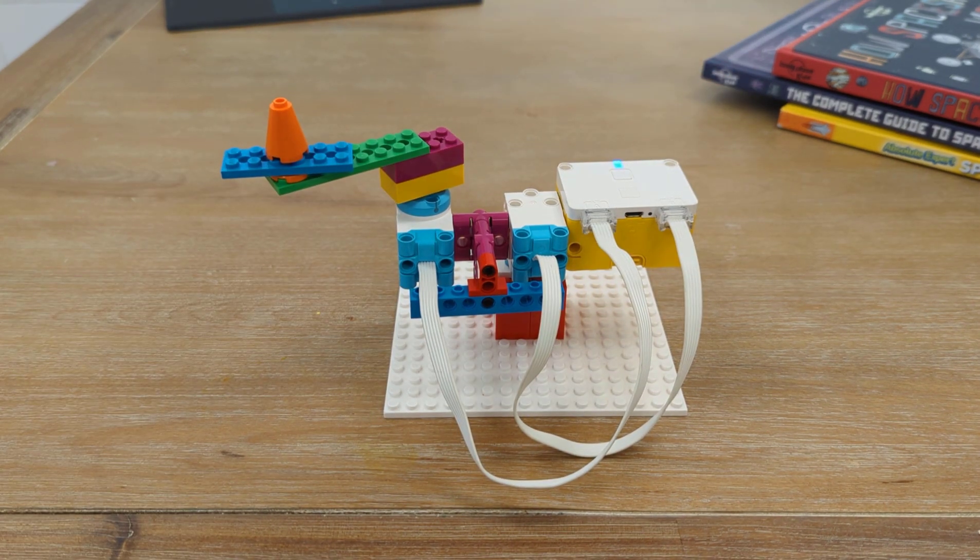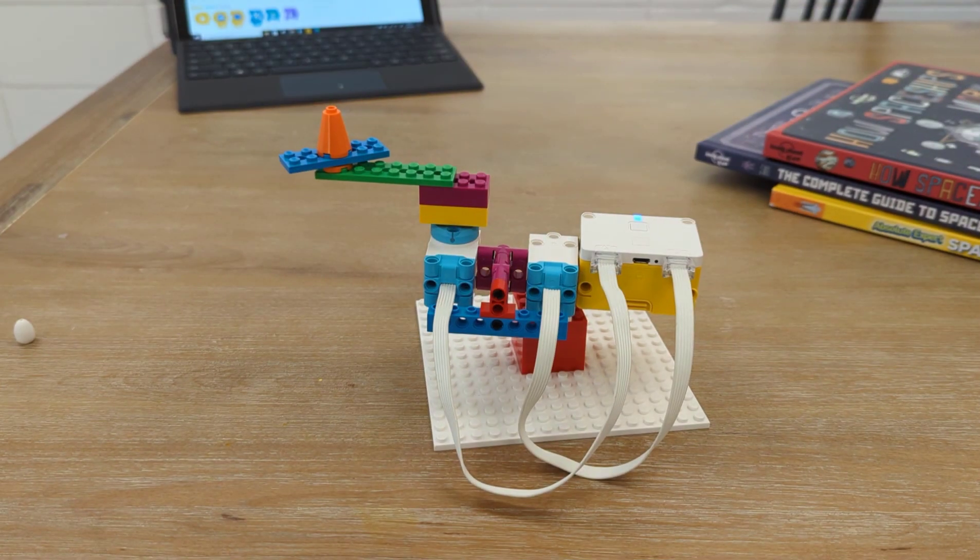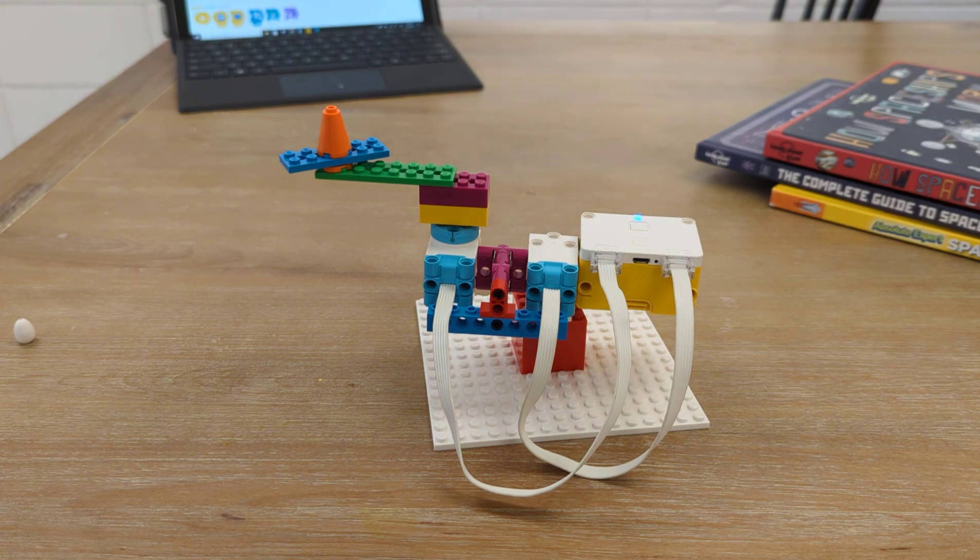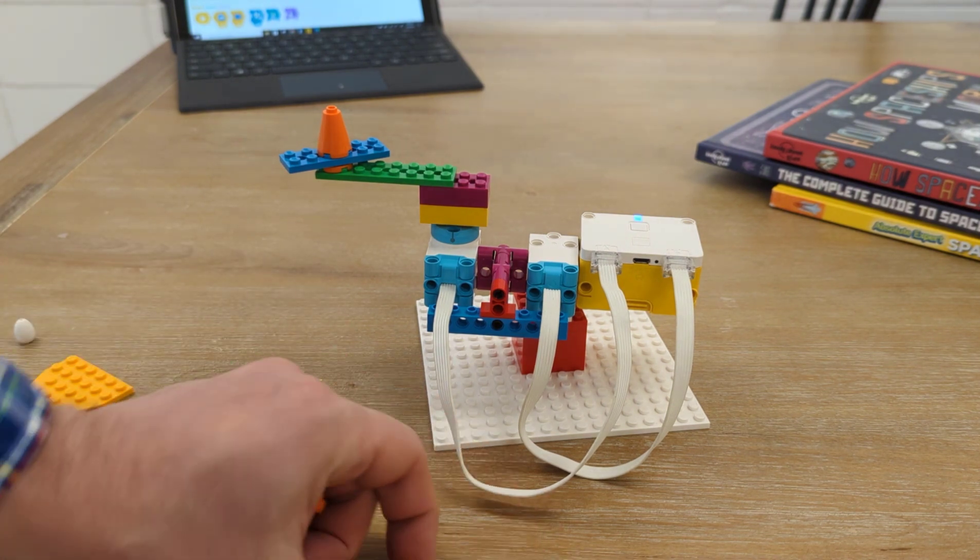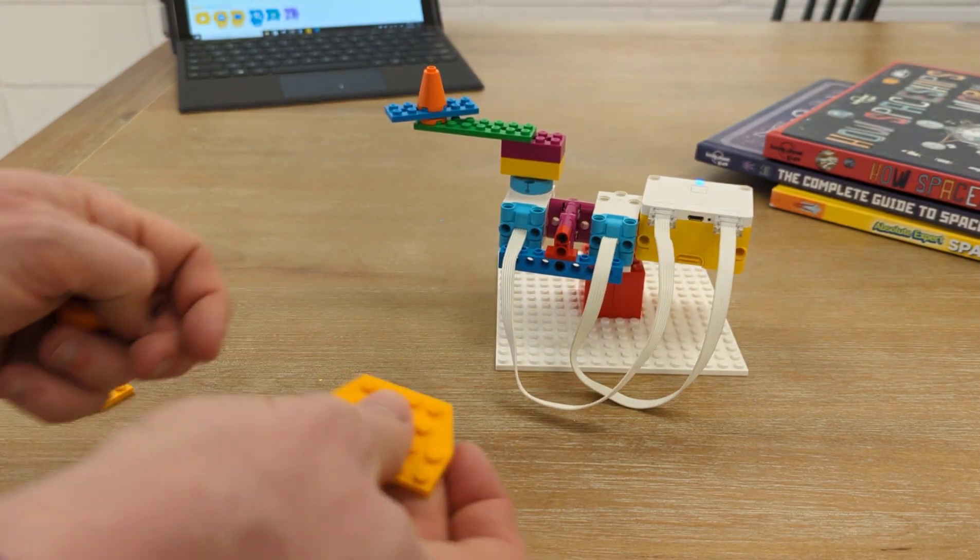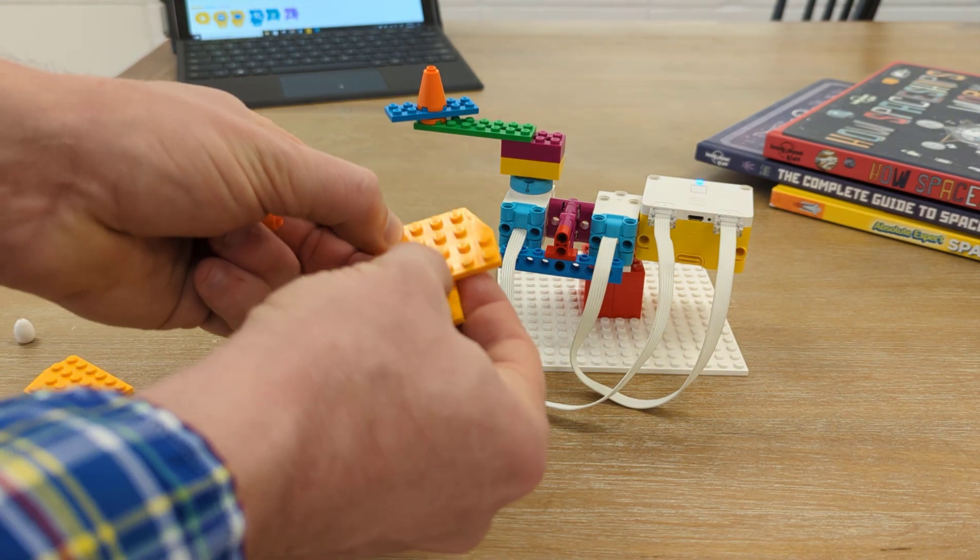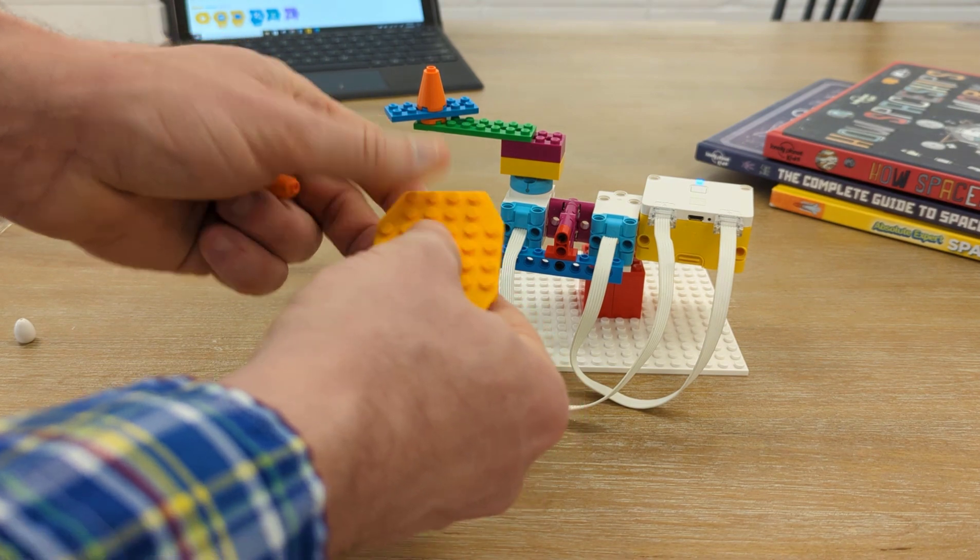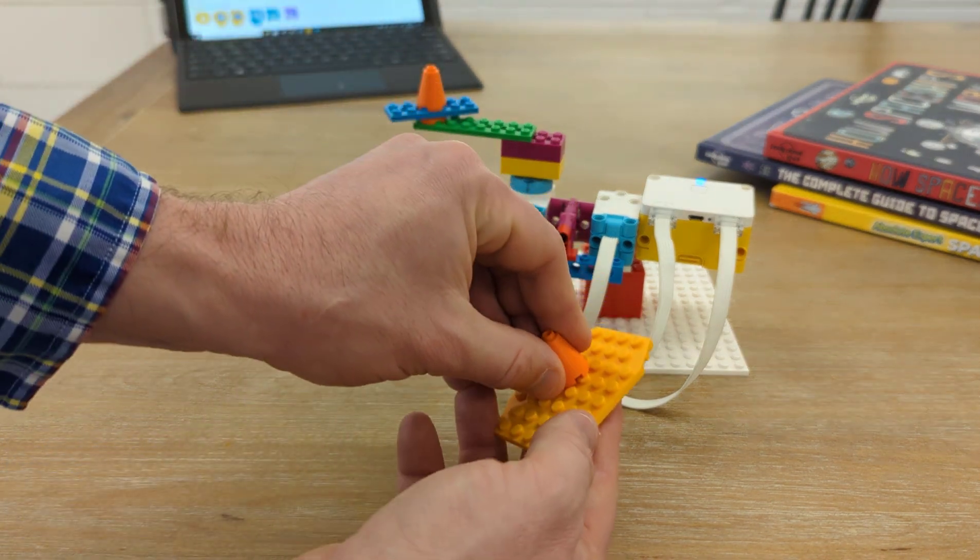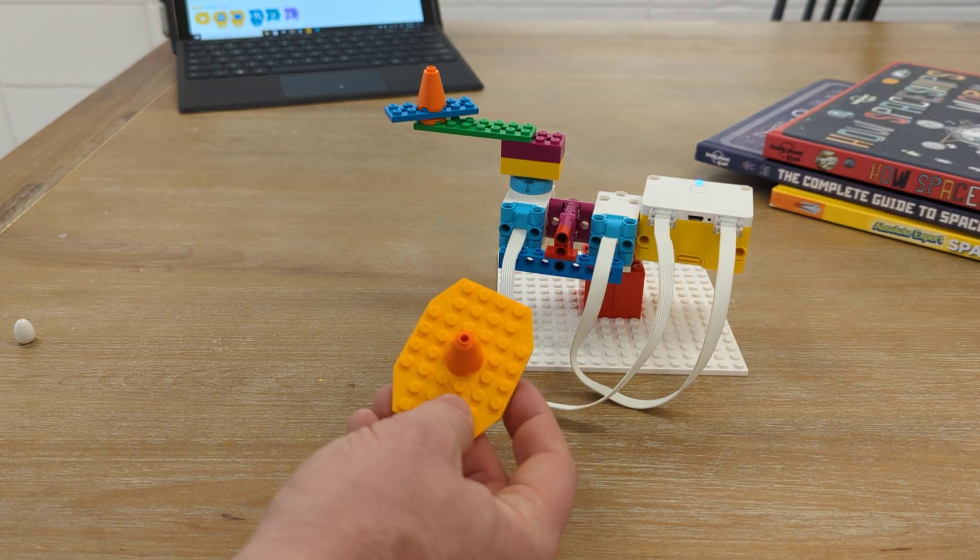Before we attach our sun and our planets to this model, I need to go ahead and build them. And so for a sun, I'm going to make something fairly basic. I'm going to use these round rounded plates to make a nice sun sign. And then I'll put this orange piece right in the middle to give it a little bit more going on.